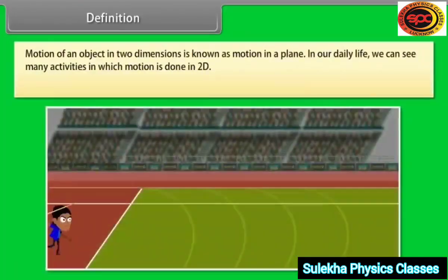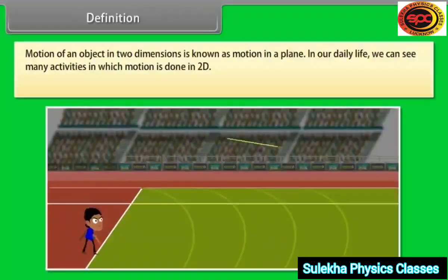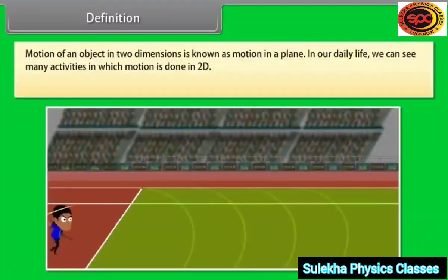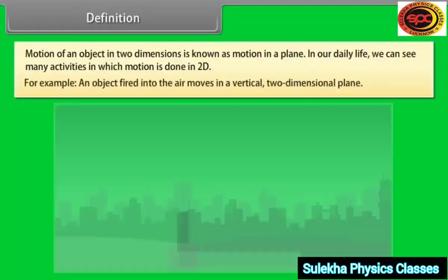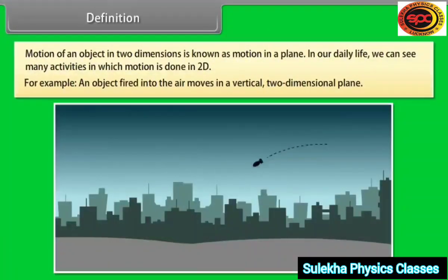Motion of an object in two dimensions is known as motion in a plane. In our daily life, we can see many activities in which motion is done in two dimensions. For example, an object fired into the air moves in a vertical two-dimensional plane.